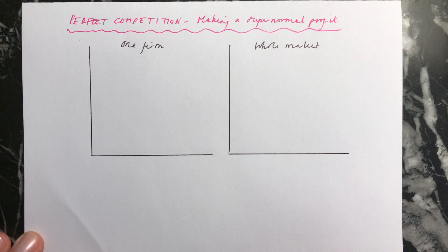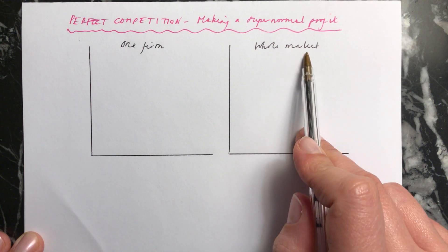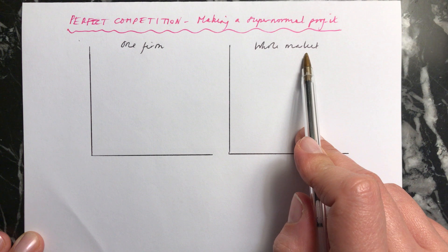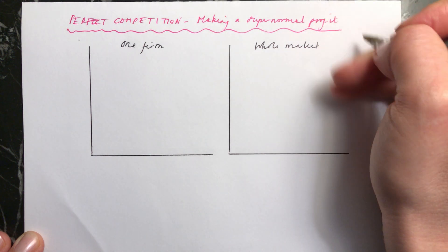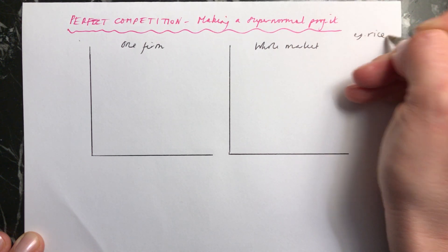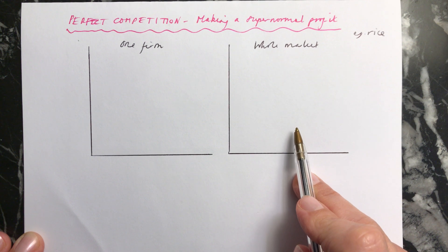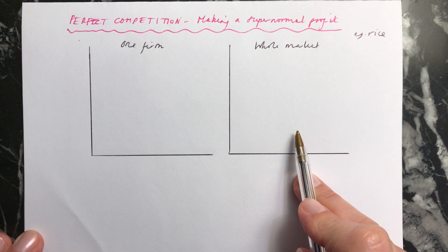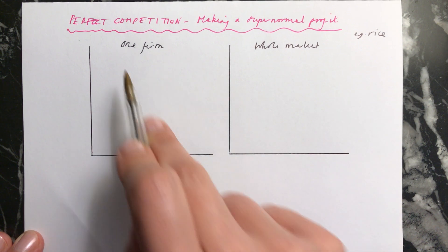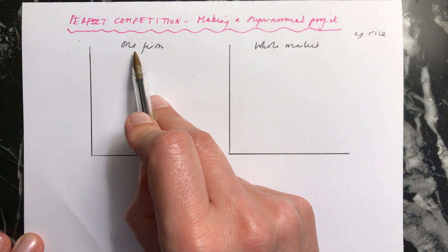Remember when we're looking at perfect competition we need to have two diagrams. On the right hand side this is the whole market. So if we're imagining that these are rice farmers, this is all rice farmers — the whole market for rice. And then this is one firm, so this is one rice farmer.